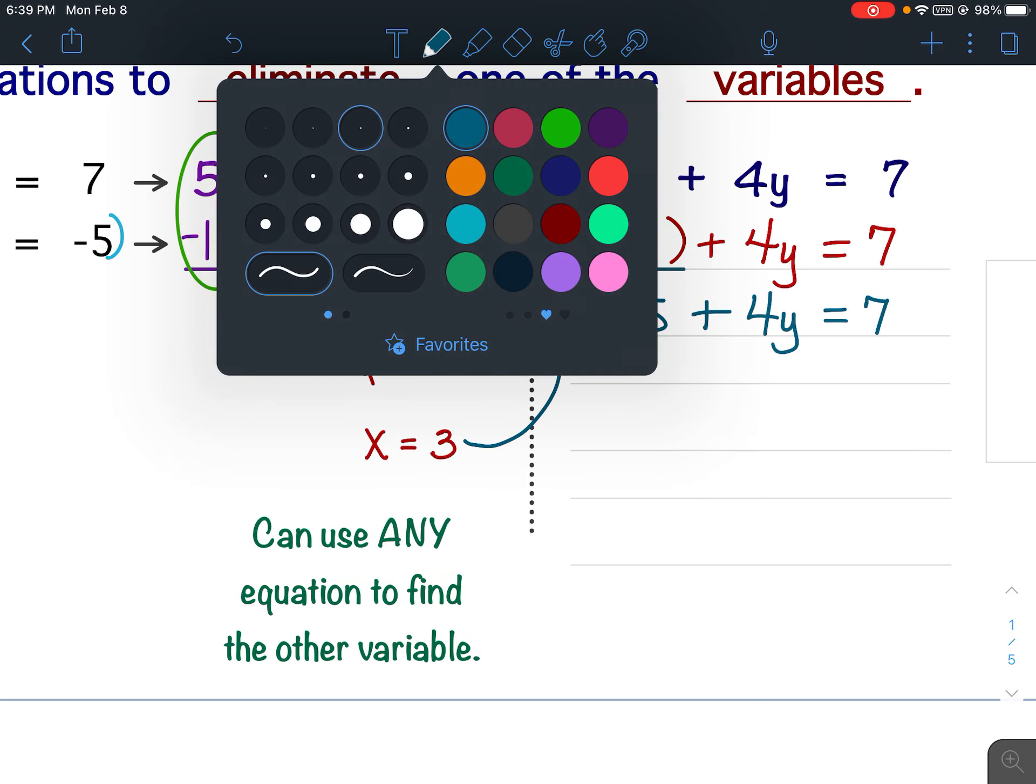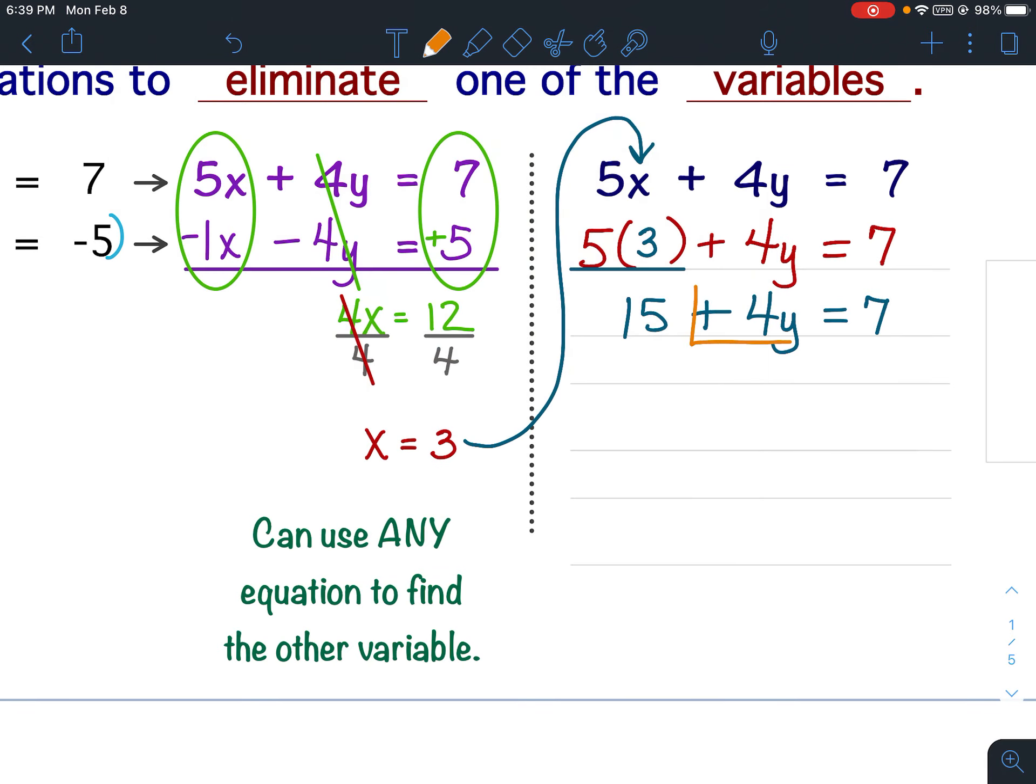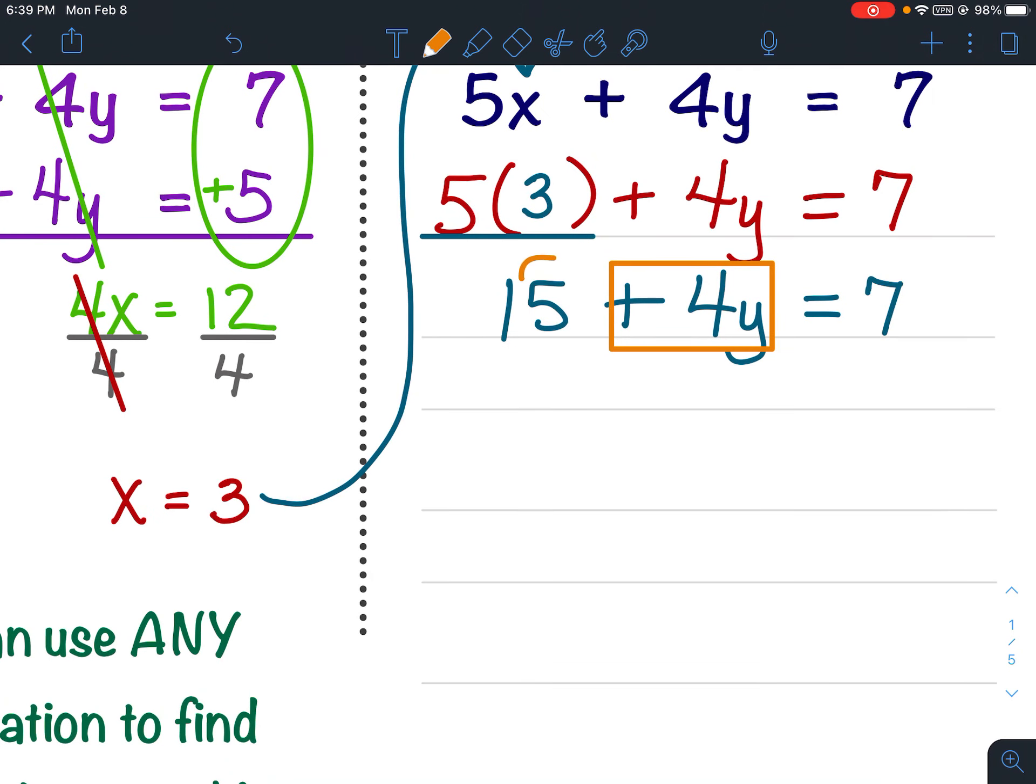After you do that, you should recognize that this is a two-step equation. If you want to, you could box your variable term. Then we're going to take the constant term to the right using the inverse operation. So since it's positive 15, I'm going to subtract 15 from both sides. That allows me to cancel the 15s. Bring down the 4y. And 7 minus 15 is negative 8.